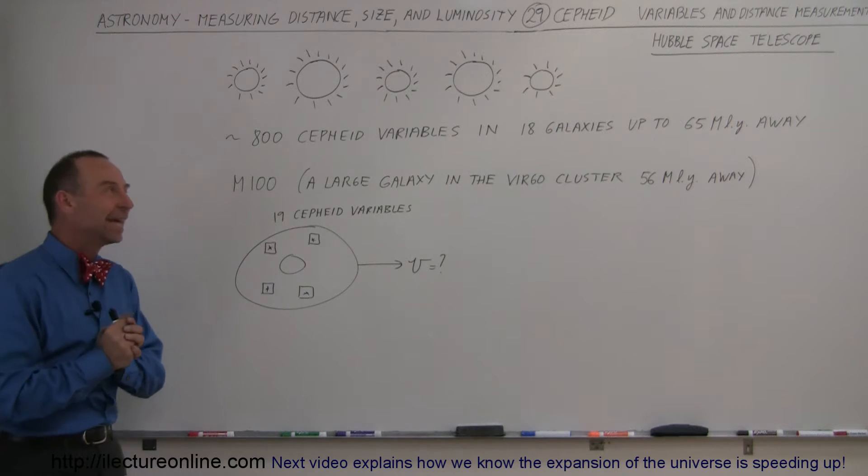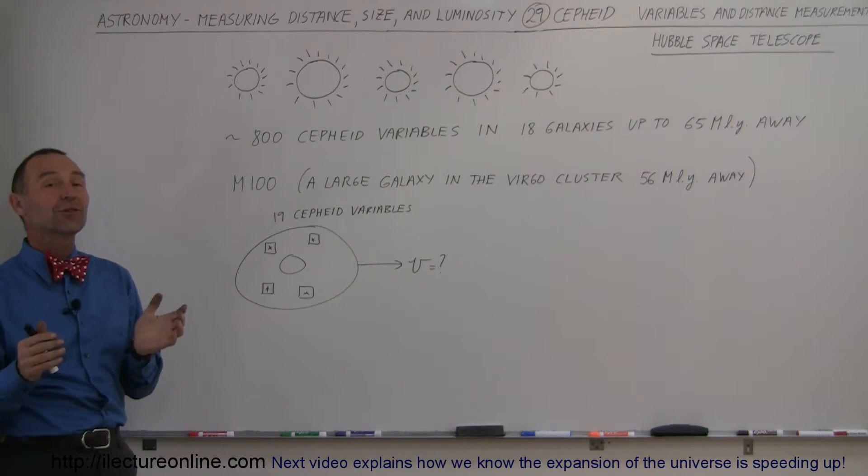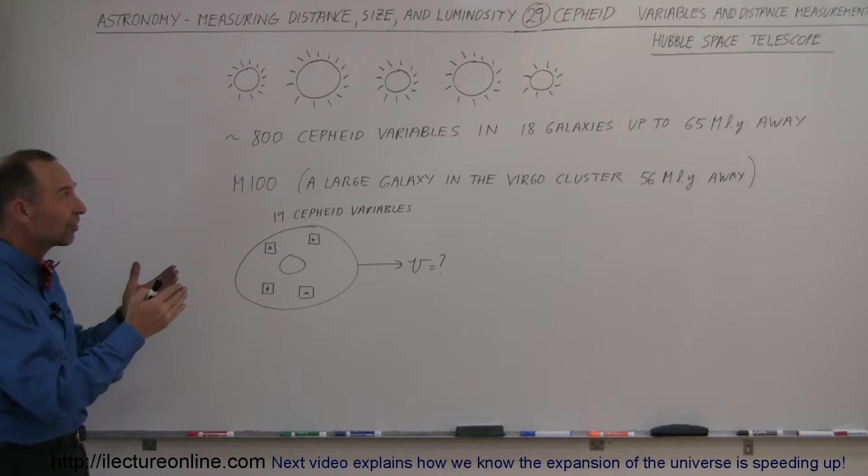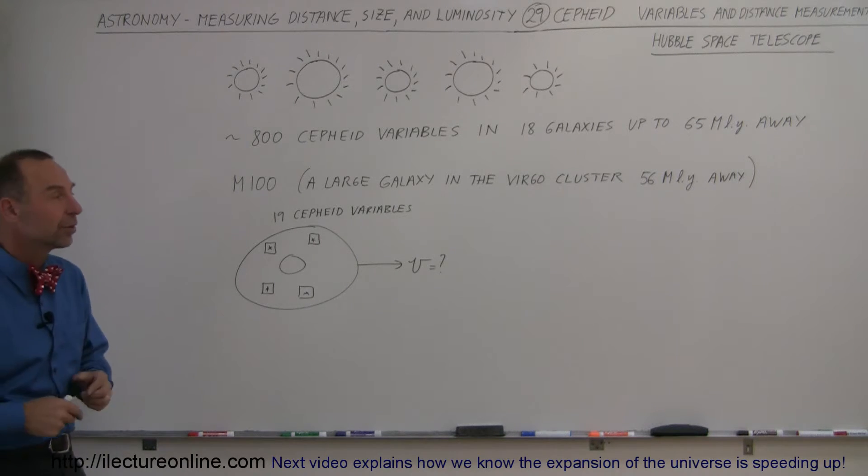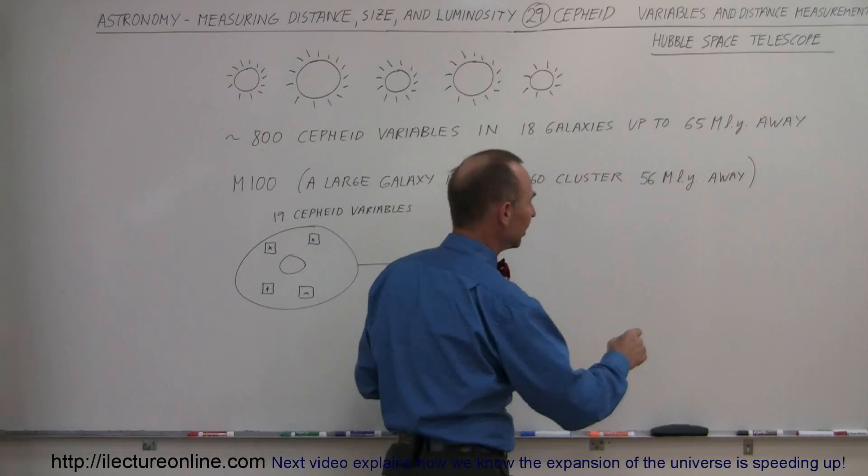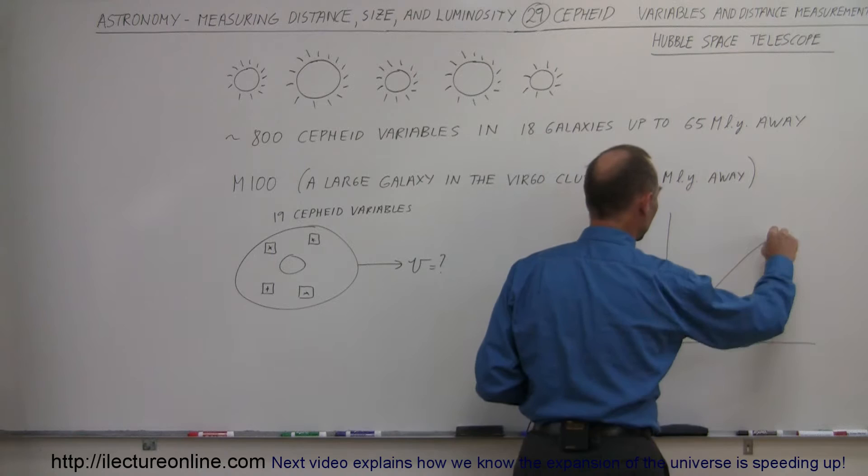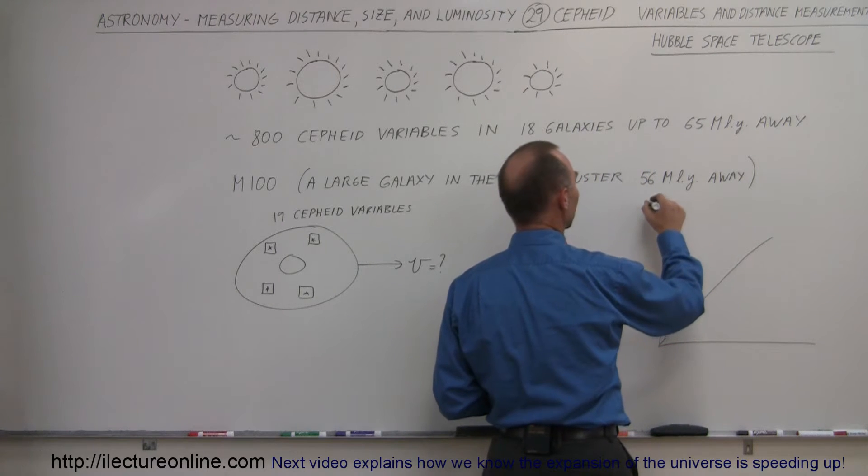Welcome to Electron Line, and now let's talk about the Hubble Space Telescope and Cepheid variables. Remember that Cepheid variables were these variable stars that had periodicities of 1 to 100 days, and we also discovered that the periodicity had a linear relationship with their luminosity, or their magnitude.